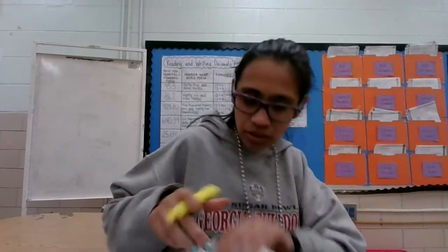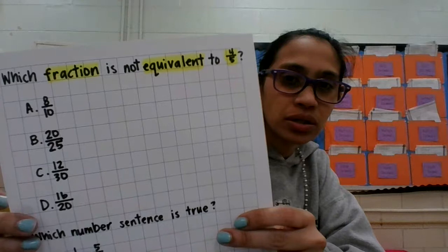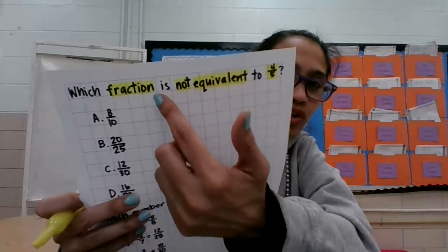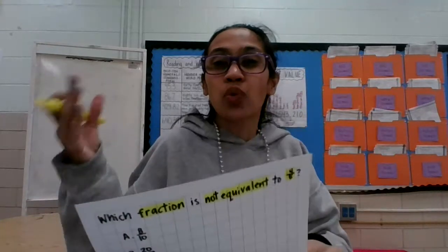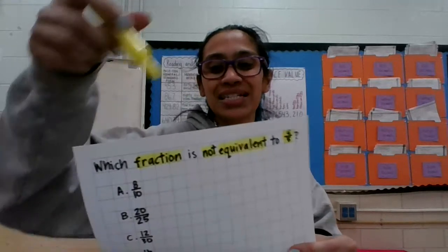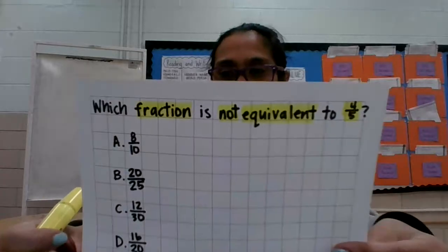I'm also going to mark four-fifths since that's the fraction we're looking at. There's another very important keyword: 'not' — right there. If you don't see that three-letter word, you can get the answer completely wrong even if you know how to do it. So are we looking for the answer that IS equal to four-fifths? No — we're looking for the one that is NOT equal to it.